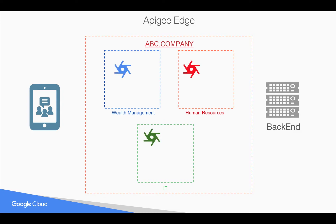Apigee Edge can support that using a concept called organizations. When you create an API proxy inside the organization, it stays inside the organization and only people with access to that particular organization can see what APIs exist in it. Operations like deploying, tracing, and debugging the APIs will be available only to people with the right access in that organization.